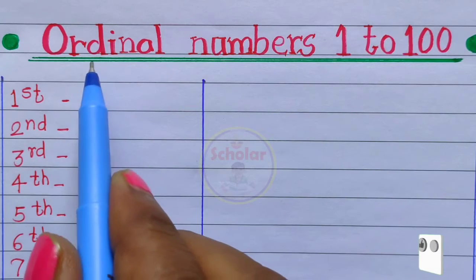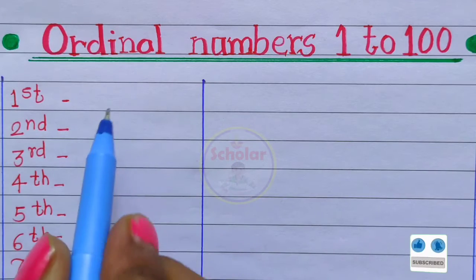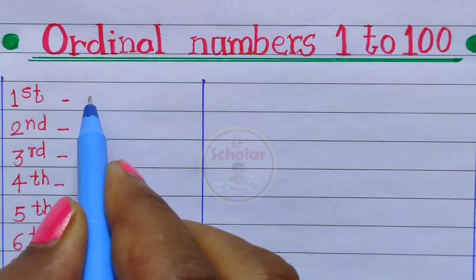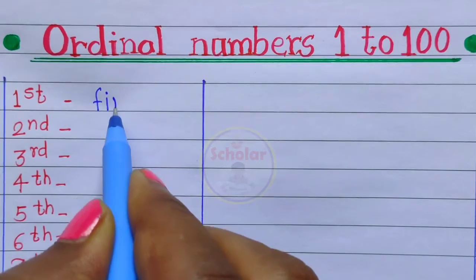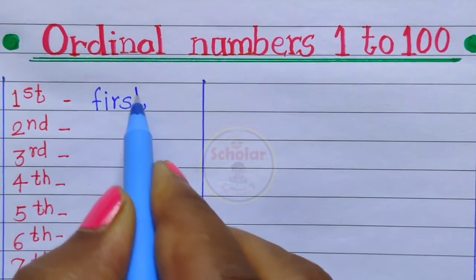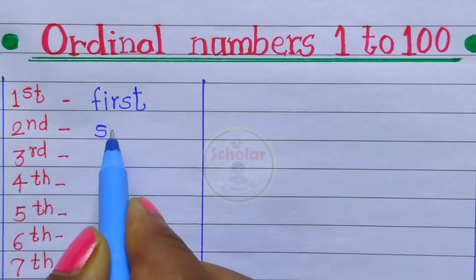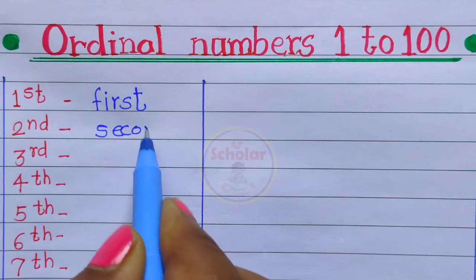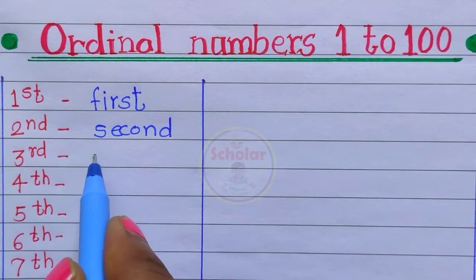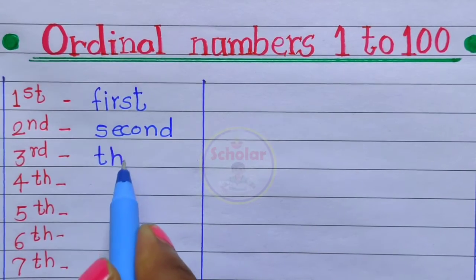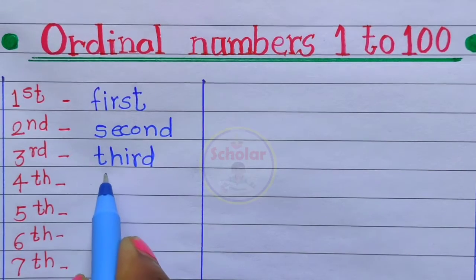Hello friends, welcome to our scholar channel. Today we learn ordinary numbers 1 to 100. Let's start. First — F I R S T — first. Second — S E C O N D — second. Third — T H I R D — third.